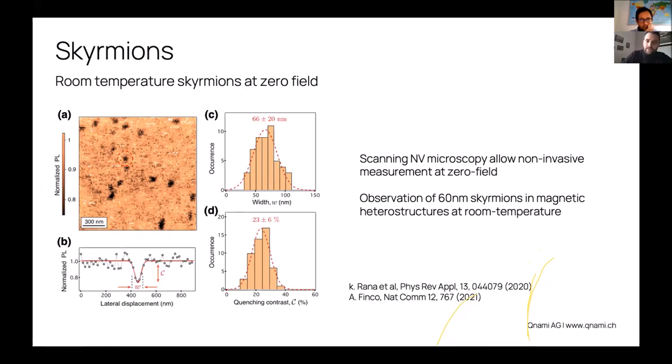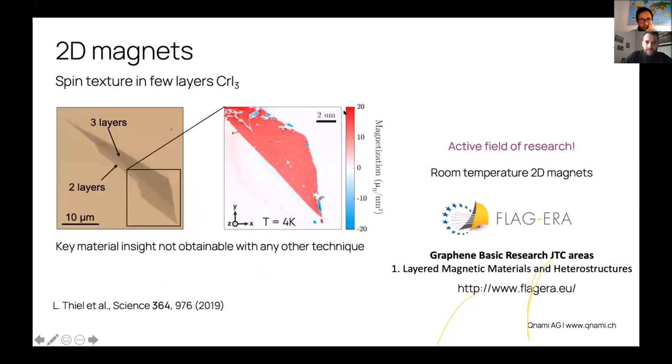My last slide will be for 2D magnets. This is a proof of concept experiment which happened at cryogenic temperatures, but it is really information that you can only obtain with scanning NV microscopy. This is now becoming an active field of research with a quest for finding such materials that would also work at room temperature, and I do believe that scanning NV microscopy will be a key tool to confirming the existence of such materials.